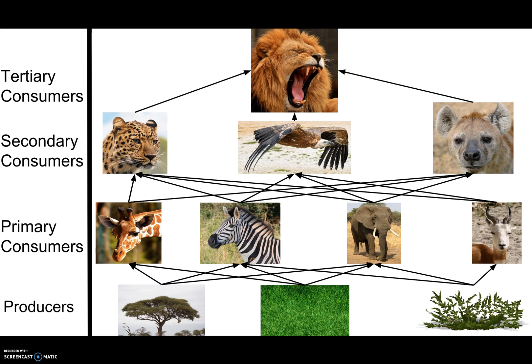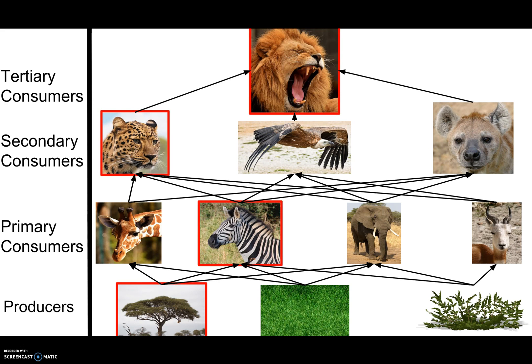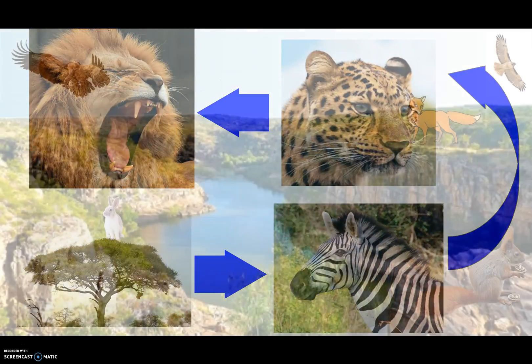The producers produce their own food, and then the primary consumers depend on them for food, and then the secondary consumers depend on the primary consumers for food, and then eventually the lion depends on everything else for food. You can see that the lion, the cheetah, the zebra, and the tree can be made into a food chain.